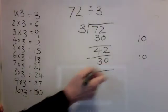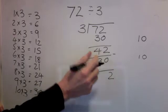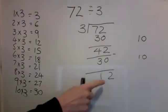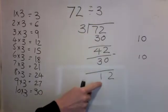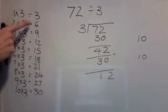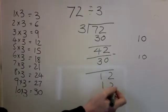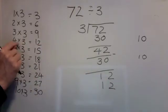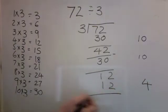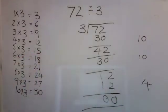Take the 30 away. 2 take away nothing is 2. 4 take away 3 is 1. I'm left with 12 — my new number is 12. I'm looking for a number as close to 12 as possible without going over, and there is 12. So I'll write in my 12. I've used 4 times 3 to make 12. Take that away and see what's left — nothing. So I've finished.